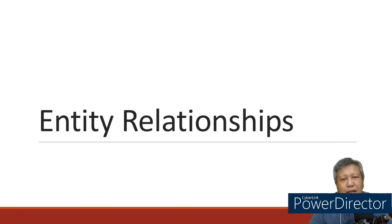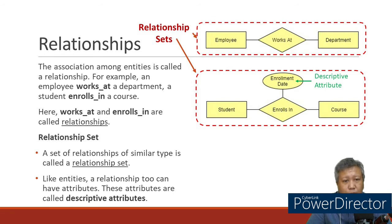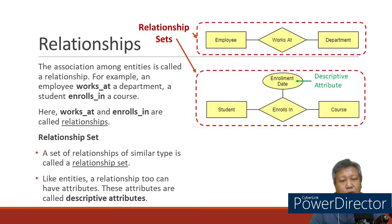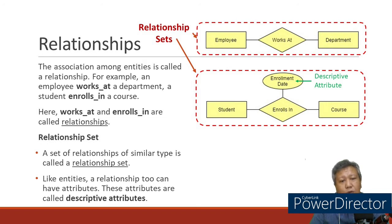Welcome back to our discussion about the Peter Chen Notation ERD diagram. Now we will discuss relationships. A relationship is defined as the association among entities. For example, an employee works at a department, or a student enrolls in a course. We mentioned four entities: employee, department, student, and course. The keywords 'works at' and 'enrolls in' — those are what we call relationships.